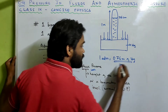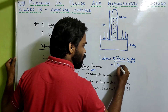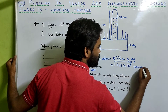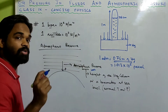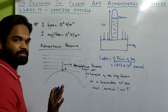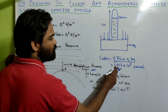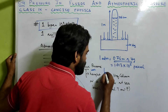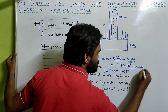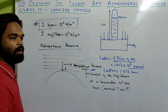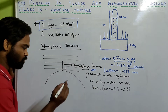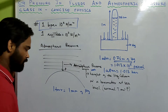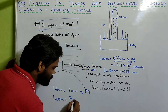When 1 atmosphere is converted to Pascal, it equals 1.013 × 10⁵ Pascal. So 1 atmosphere is also a unit of pressure used to measure atmospheric pressure. We can say 1 bar is 10⁵ Newton per meter square, so 1 atmosphere is approximately equal to 1.013 bar. There is another unit, tor, where 1 tor equals 1 mm of mercury, and 1 atmosphere equals 760 tor.